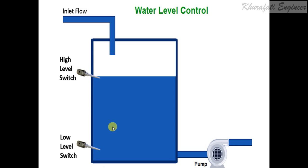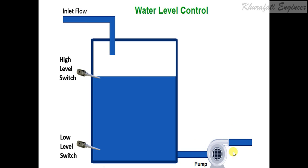When both the float valves are switched off, the inlet process will start. That means when the water level goes below the low level, the inlet will start and it will remain switched on until both the float valves are on. When both the float valves are on and the water level reaches the high level, this inlet process will stop and the pump process will start — meaning the emptying of the tank will start — and this will remain on until both level switches are switched off.